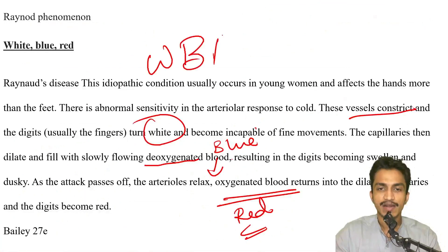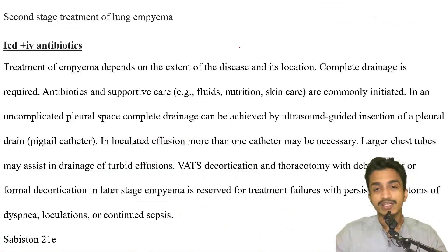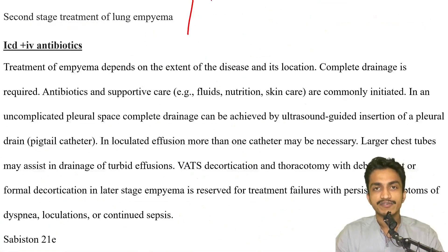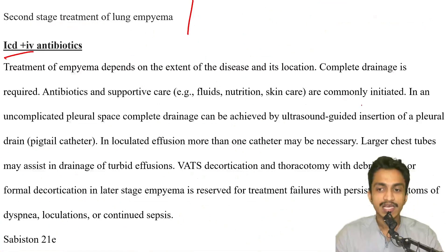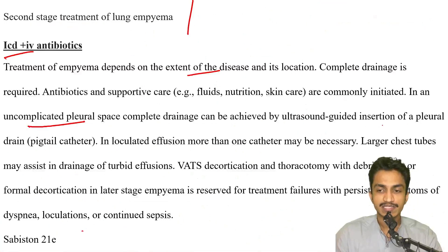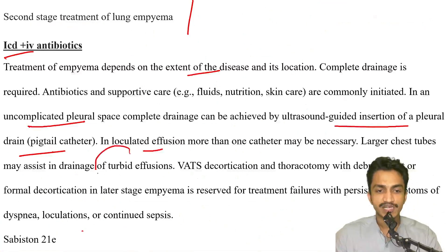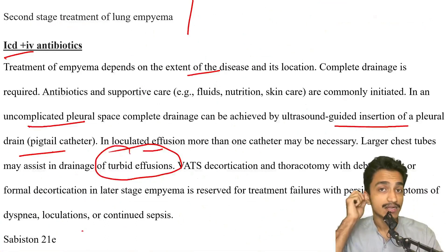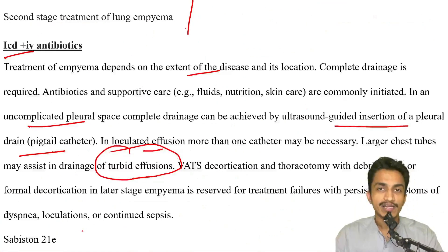For lung empyema: if after any mycobacterial or tuberculosis infection the patient has been tapped and is now having recurrence, we should go for ICD drainage with IV antibiotics. Taken from Sabiston — it depends on the extent of disease. In uncomplicated cases, drainage can be achieved by pigtail insertion; in loculated or turbid cases, especially mycobacterial infections, we apply clinical logic. The answer should be ICD with antibiotics.